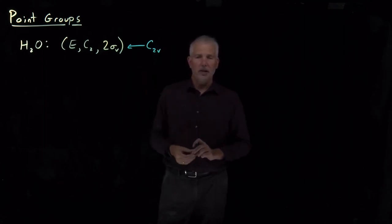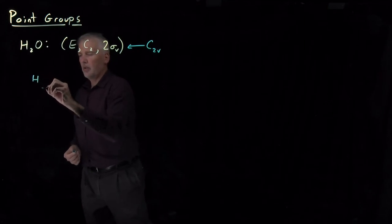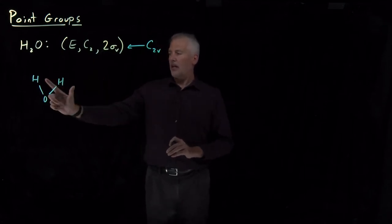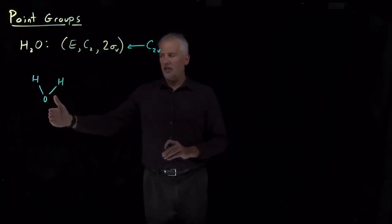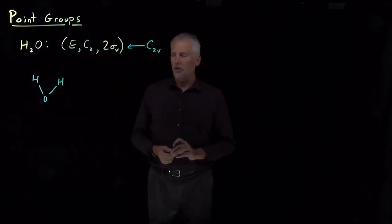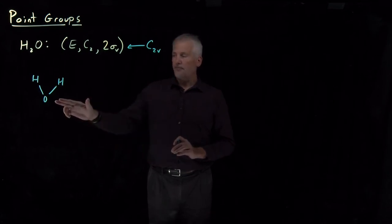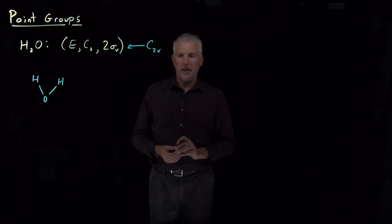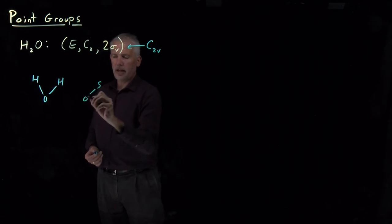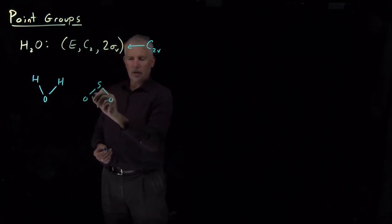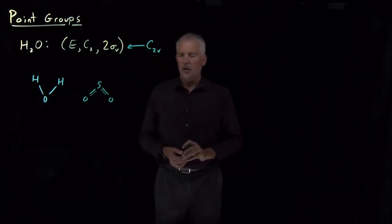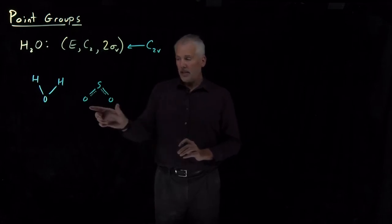For example, water is in the C2V point group because it has a C2 rotation, a reflection plane that bisects it in one direction, and a reflection plane that bisects it in another direction. Similarly, sulfur dioxide — which I'll draw showing its resonance structures to emphasize its symmetry — is also a bent molecule in the C2V point group.